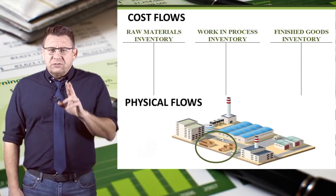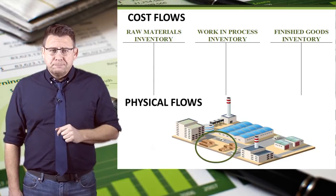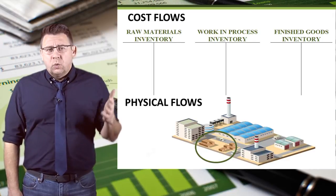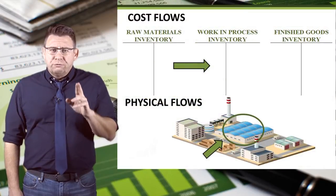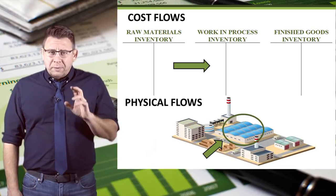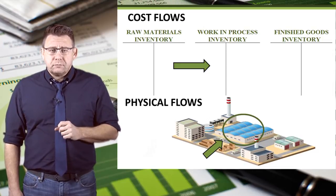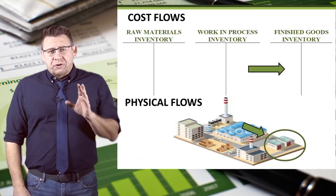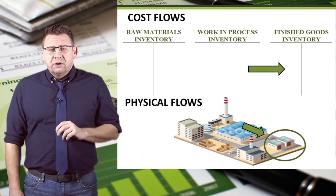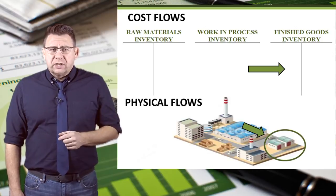When I think of these three inventory accounts I tend to visualize them as three different rooms or buildings. The raw material account is basically a raw material warehouse. When costs move from raw materials to WIP, materials physically move from the raw materials warehouse to the production floor, often a separate building. When costs move from WIP to finished goods inventory, completed products physically move from the production floor to a finished goods warehouse or store room, which is a separate location.